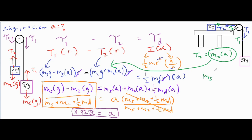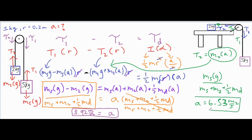Going through the same algebraic steps as before but with the updated T2 expression, the final formula becomes a equals m5·g divided by (m5 plus m2 plus one half·m_d). Plugging in the five kilogram mass times 9.8, divided by five plus two plus one half times the disc mass of one kilogram, the linear acceleration for this second scenario comes out to be 6.53 meters per second squared.